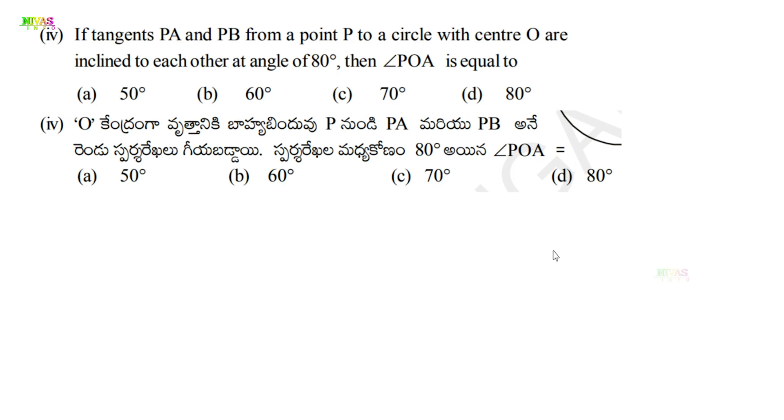From external point P, we draw two tangents to the circle. The points of contact are A and B. The angle between the tangents is 80 degrees. At the point of contact, the radius is perpendicular to the tangent, so we have 90 degrees here and 90 degrees here.